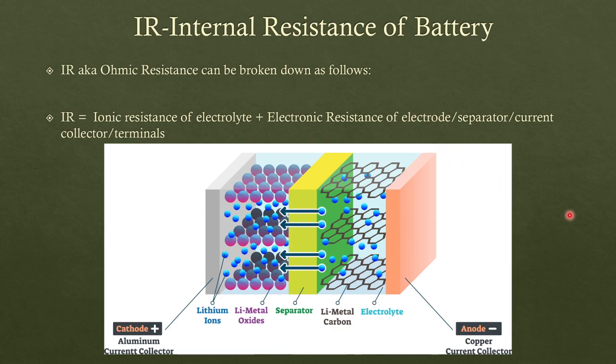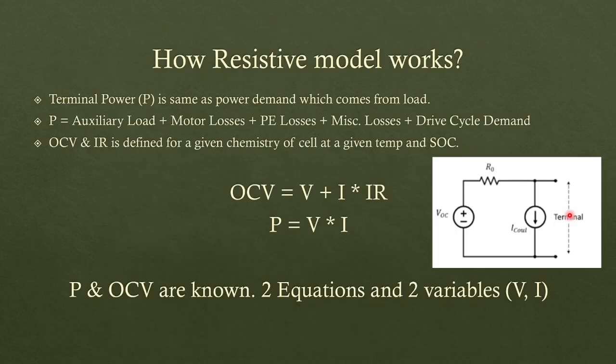So I hope this clarifies the breakdown of internal resistance. Now let's look at how the resistive model works in the background. So you have terminal power, which is the power applied at the terminals of the battery. So terminal power is same as the power demand which comes from the load. When you apply a load, the current flows through it. The voltage across the load times the current will give you power or terminal power.